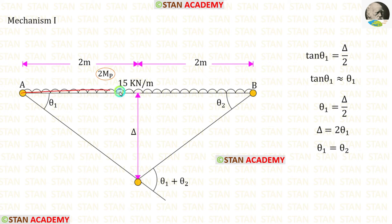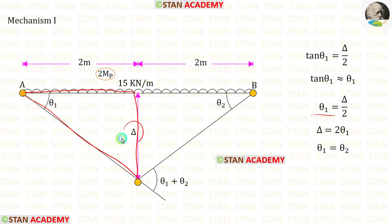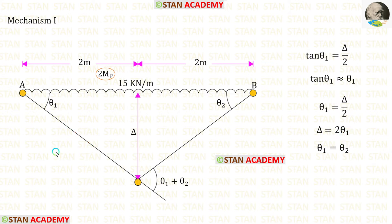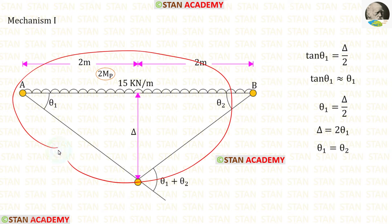Let us take this triangle. In this triangle, theta 1 is equal to delta upon 2, so delta is equal to 2 theta 1. Due to the symmetrical nature of this triangle, theta 1 will be equal to theta 2.